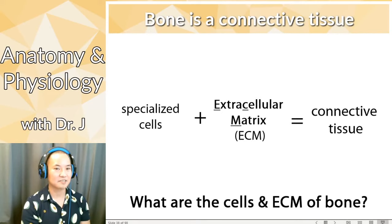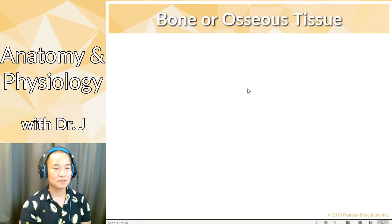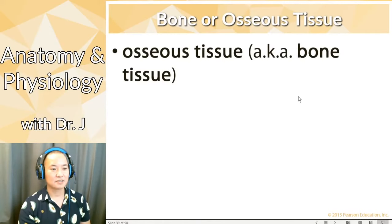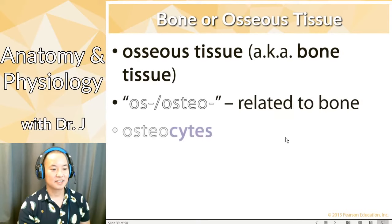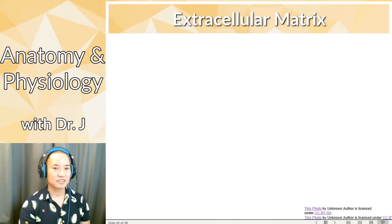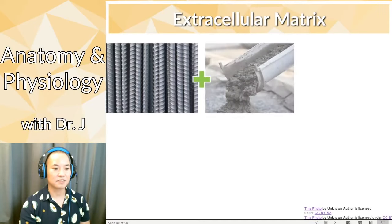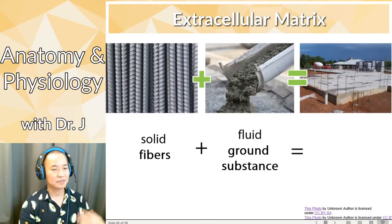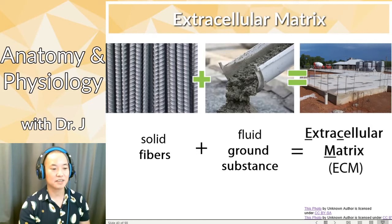What are the cells and extracellular matrix of bone? Bone — sometimes called osseous tissue, because 'os-' refers to bone — has osteocytes as its cells. The root '-cyte' means cell, so osteocytes are bone cells. The extracellular matrix has protein fibers plus a ground substance, giving you the full matrix of bone.